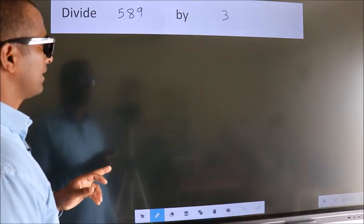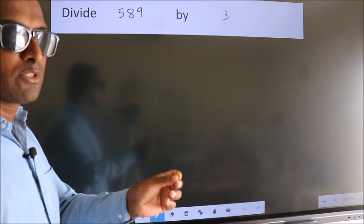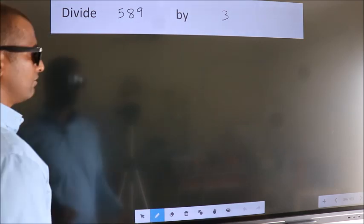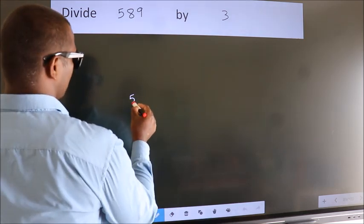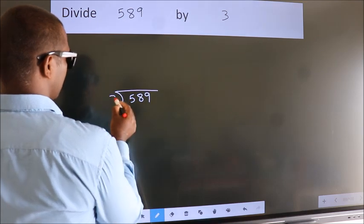Divide 589 by 3. To do this division we should frame it in this way. 589 here, 3 here.